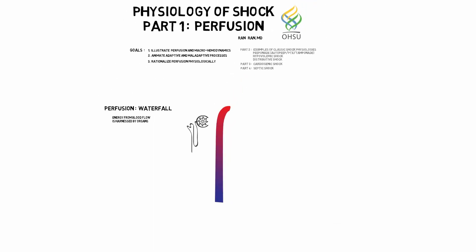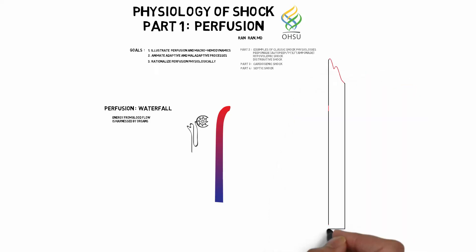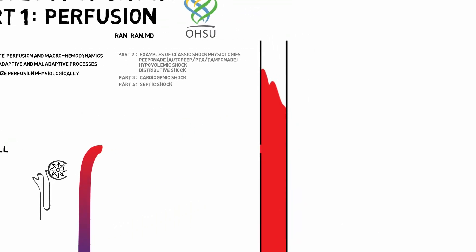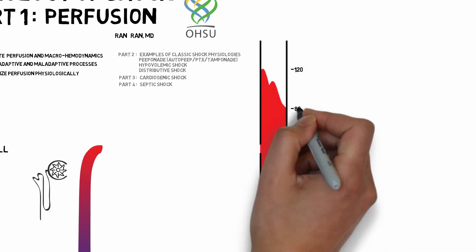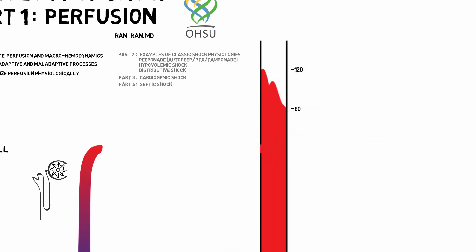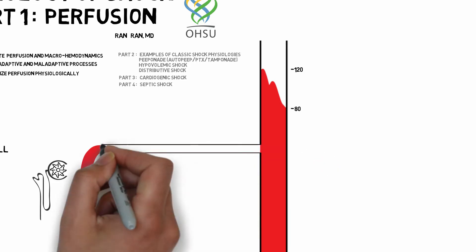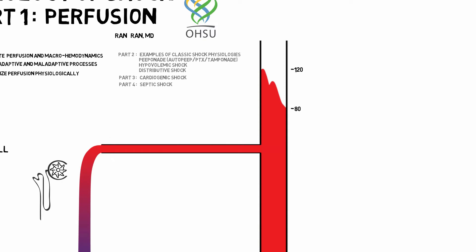In order to have flow over the ledge of this waterfall, the height in the arterial compartment — the blood pressure — must exceed the height of the ledge itself, the organ's critical perfusion pressure. This is why we use hypotension as a surrogate for hypoperfusion.